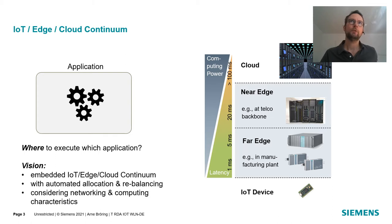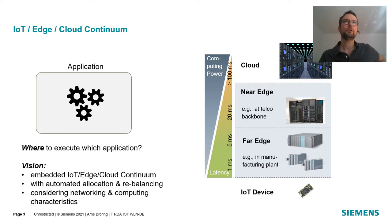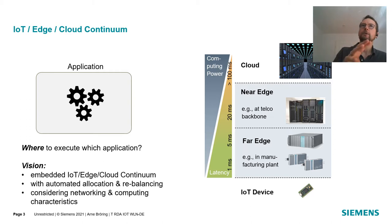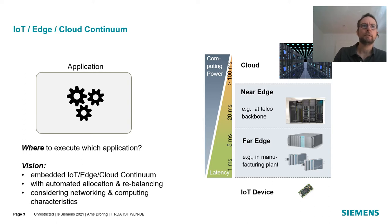Deciding this often boils down to a trade-off between computing power on the one hand and network latency on the other hand. And the vision that we have is to develop technology that really enables this compute continuum between IoT, edge, and cloud, where we can make this decision transparent and automatically decide where the application is allocated. The rebalancing due to dynamic changes is also done automatically, and of course this considers network as well as computing characteristics.